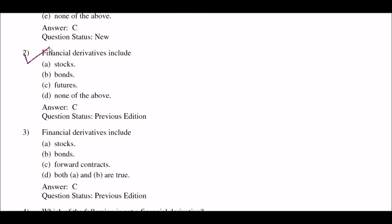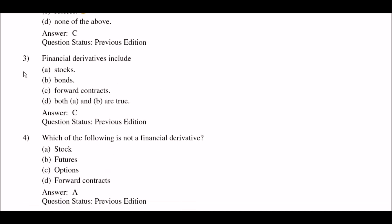Next question: financial derivatives include — option A: stocks; option B: bonds; option C: futures; option D: financial derivatives include futures. Right answer is option C: futures. Next question: financial derivatives include — option A: stocks; option B: bonds; option C: forward contracts; option D: both A and B are true. Right answer is option C: forward contracts.